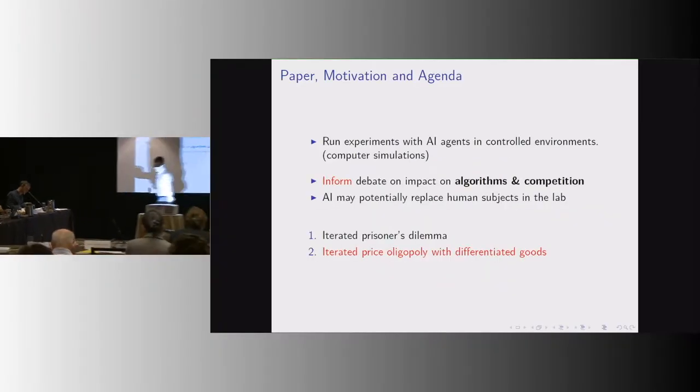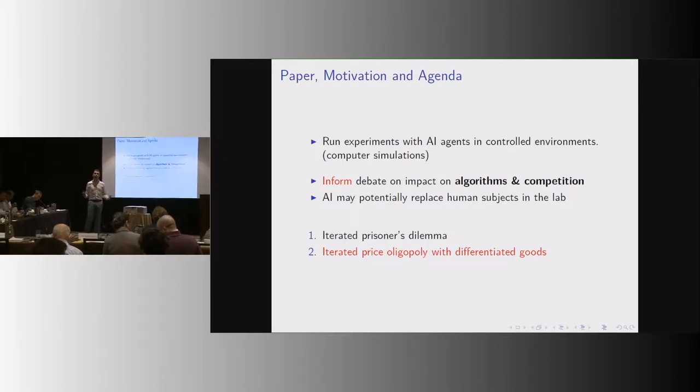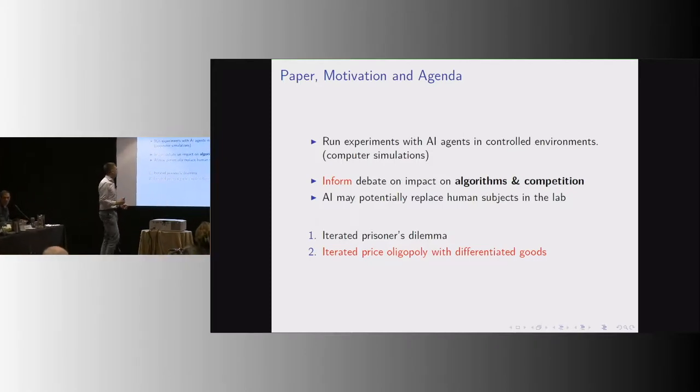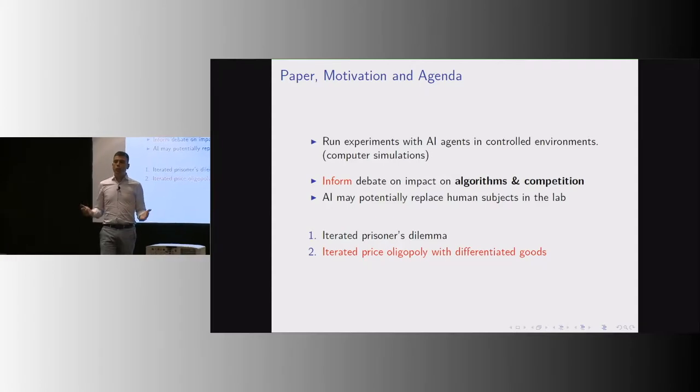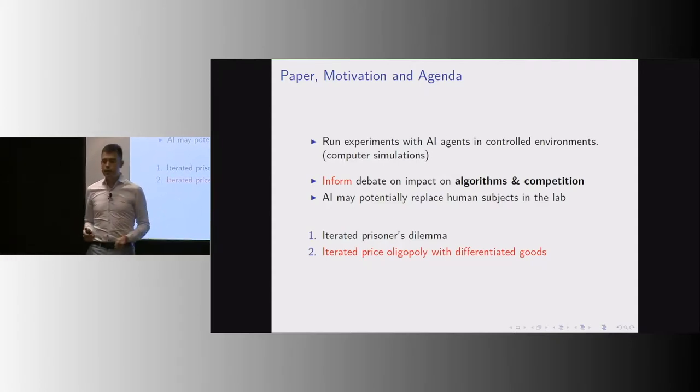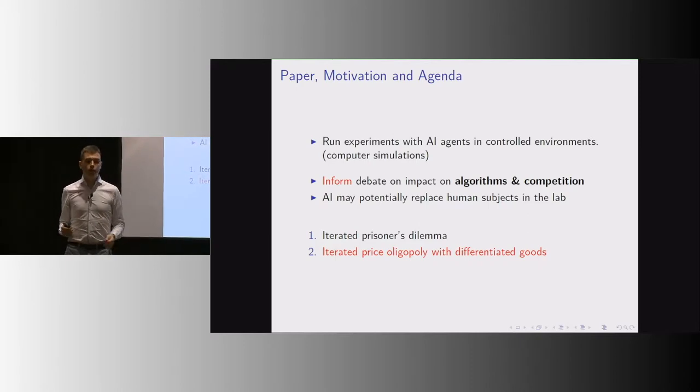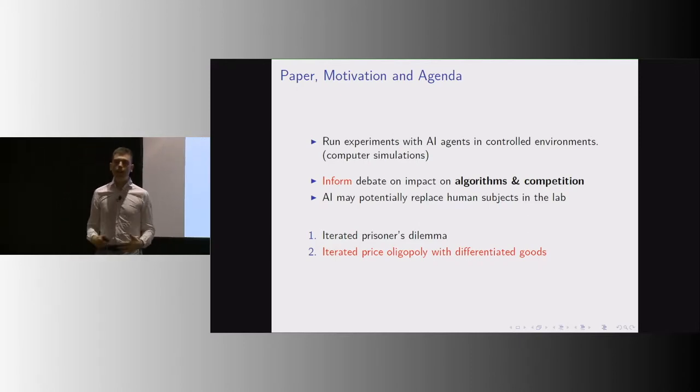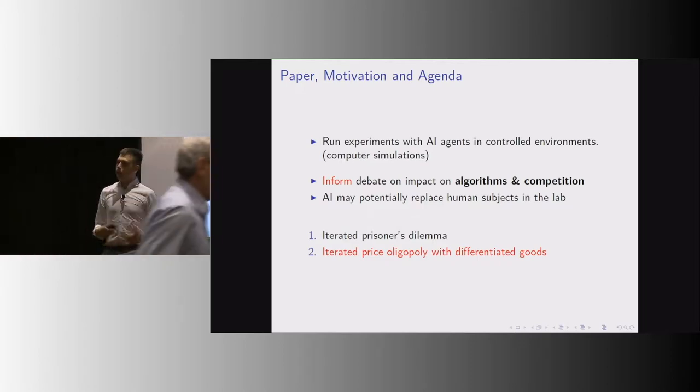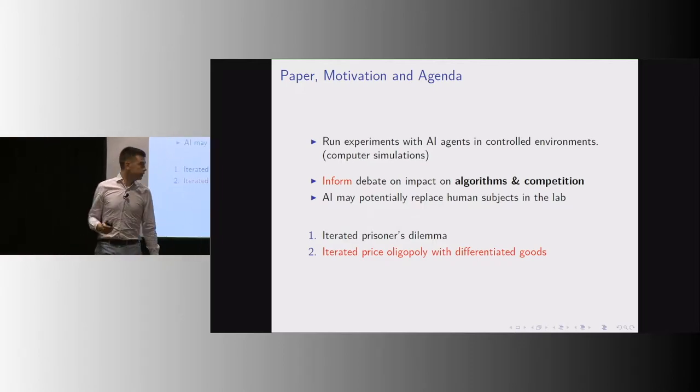What we do in this paper is run experiments with AI agents in controlled environments. We basically let the agents play games economists know a lot about. The reason we do so is because we want to bring data and inform this debate on the effects of AI on marketplaces, which is very lively and cross-disciplinary.